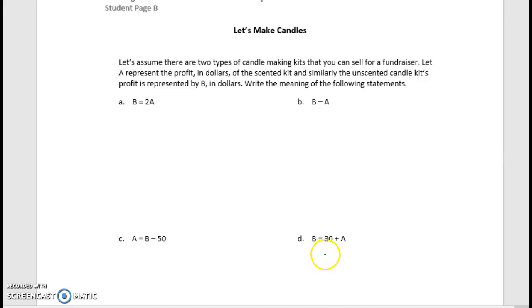So flipping over to student page B here, we have a situation. Let's assume that there are two types of candle-making kits, so we're talking about kits, that you can sell for a fundraiser. Let A represent the profit in dollars, so we're talking about money, of a scented kit. Similarly, the unscented candle kit's profit is represented by B. So we have the non-smelly candle kits, and then we have the smelly one, or the nice-scented ones. But again, we're talking about profit and the dollar.